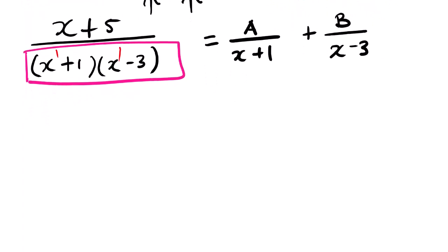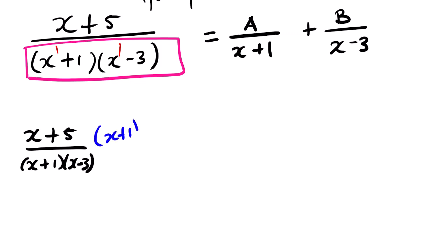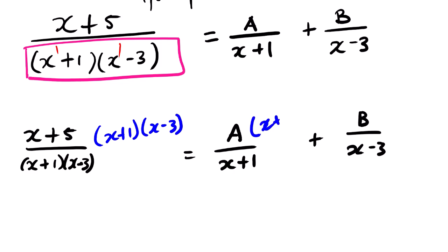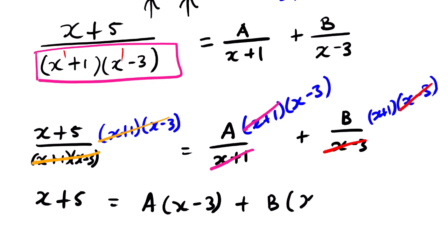Back to our question. The next step is to multiply each and every term by the LCD. On the left-hand side we have (x + 5) over (x + 1)(x - 3). Multiplying through by the LCD (x + 1)(x - 3), the denominators cancel: the left side gives x + 5, the first term on the right gives A(x - 3), and the second term gives B(x + 1).